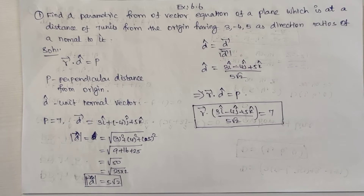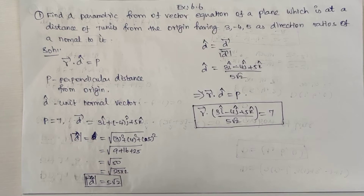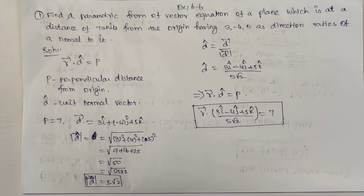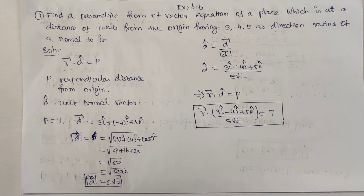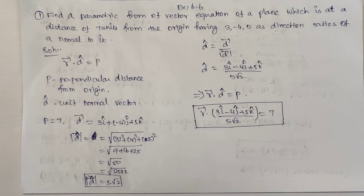Hi children, today we are going to see Exercise 6.6, Question 1: find a parametric form of the vector equation of a plane which is at a distance of seven units from the origin, having (3, -4, 5) as direction ratios of a normal to it. We already know the formula.